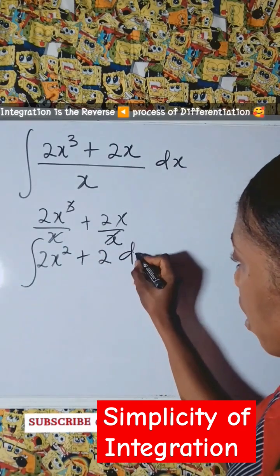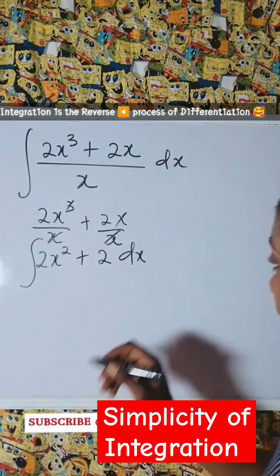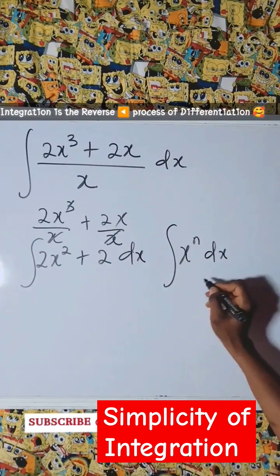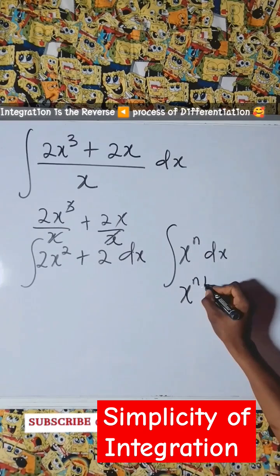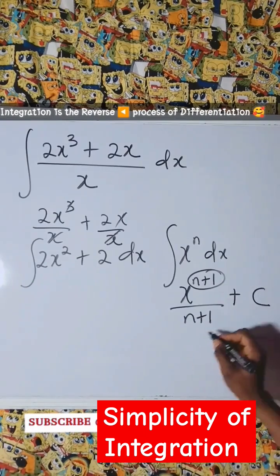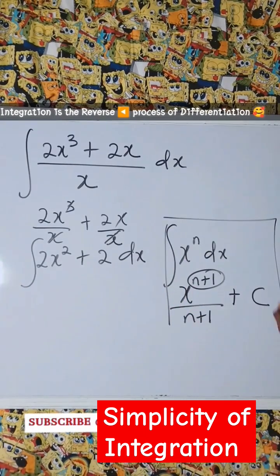So we are integrating this with respect to x. Remember that the integral of x raised to power m with respect to x gives us x raised to power m plus 1. Use this power to divide. We have m plus 1, then plus the constant c. This is our guide.